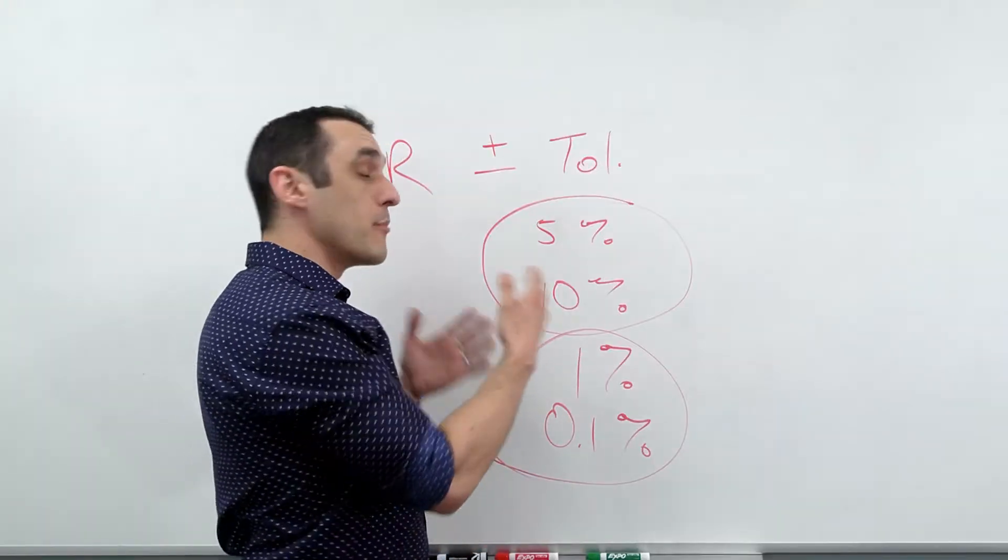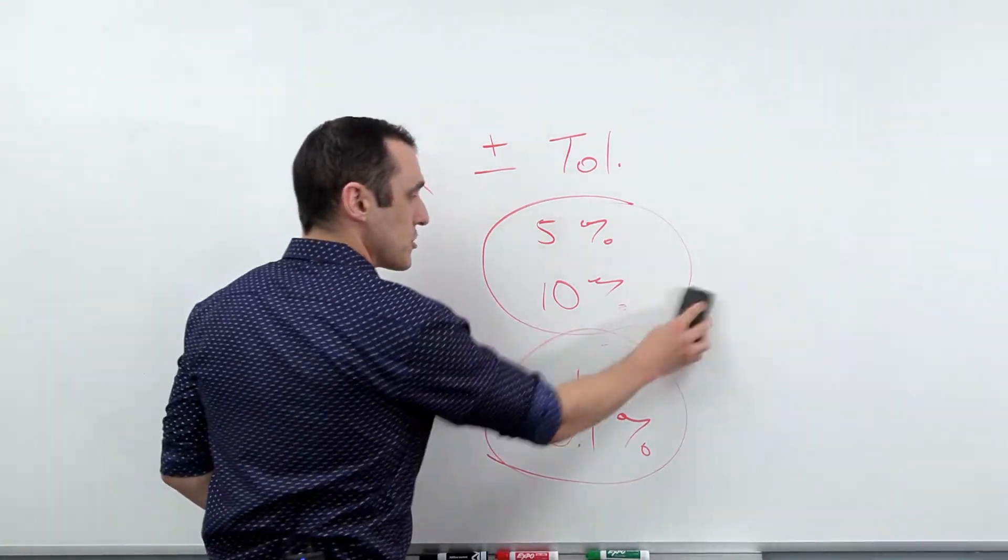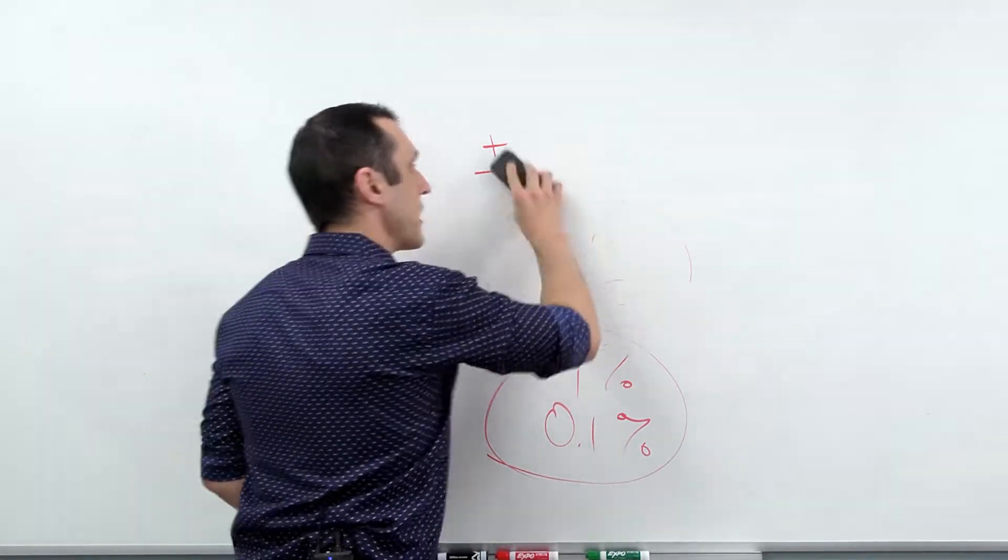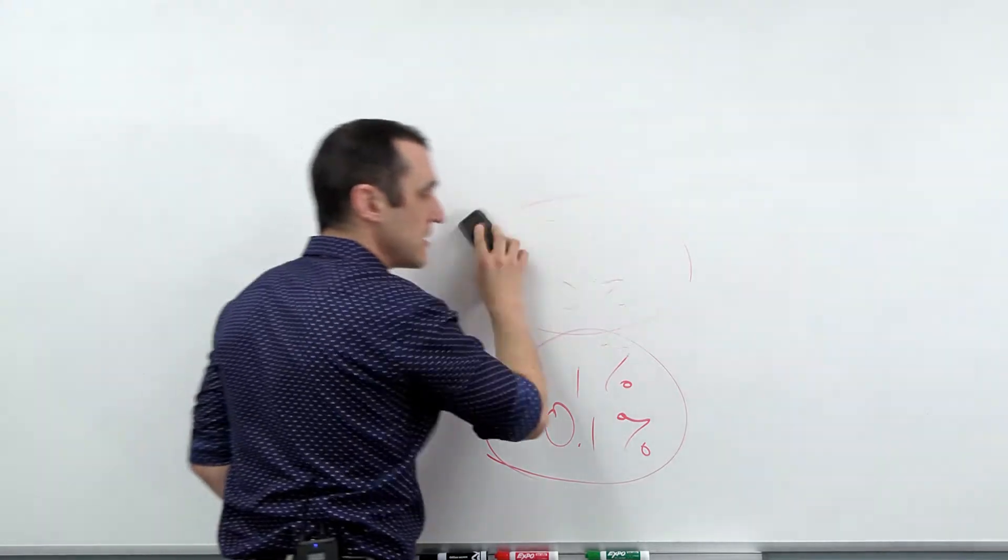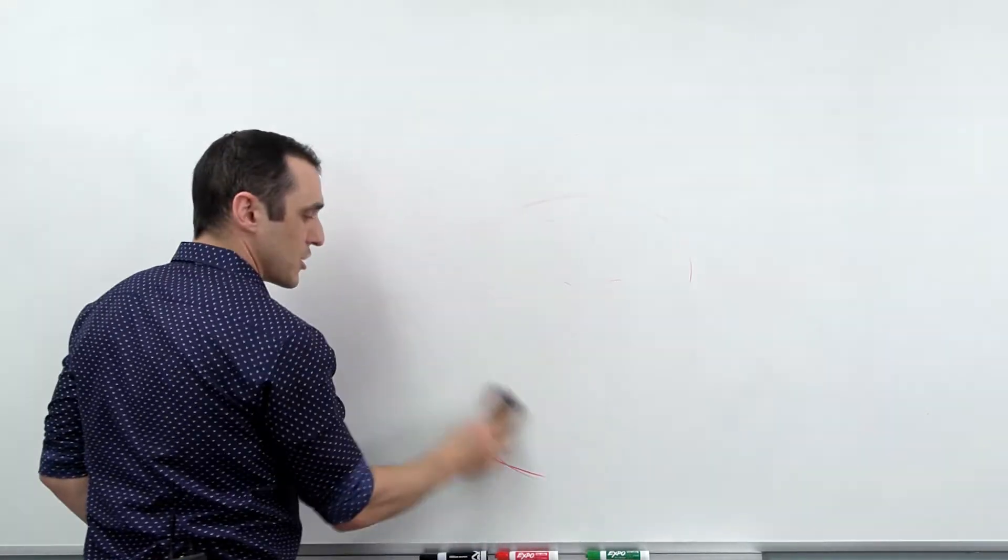So I mentioned one application with power where component tolerances are important, but they're important in other applications too. So a great example is like with filtering. And this is something I've had to recently deal with on an analog board on a client project. And I'll just kind of show you what I mean.